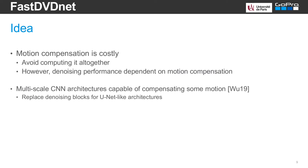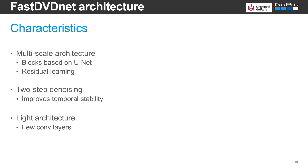Our approach incorporates these ideas. However, we know that compensating motion by estimating optical flow can be expensive and could take a lot of time. Instead, our method avoids estimating the optical flow. Yet we know handling motion is important. Our architecture employs multiscale denoising blocks, which have been observed to handle some degree of motion. As several of these blocks are combined in a two-step cascaded denoising architecture, our method successfully handles motion without estimating the optical flow.